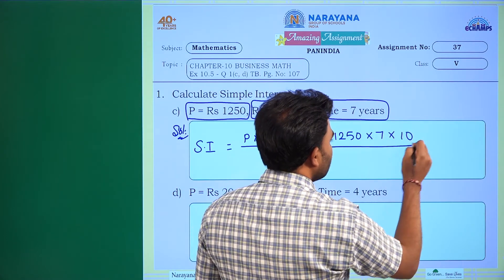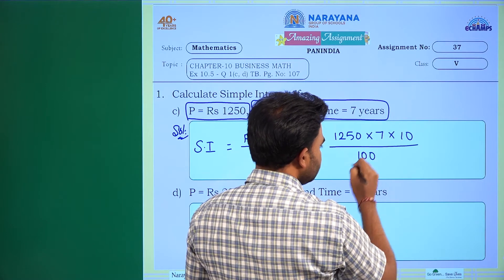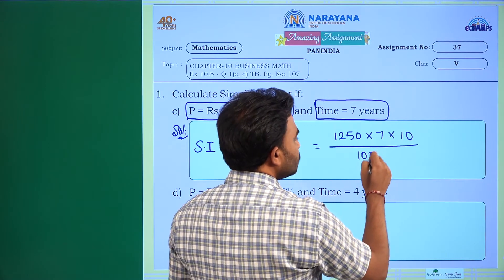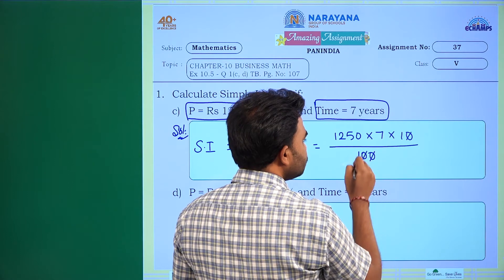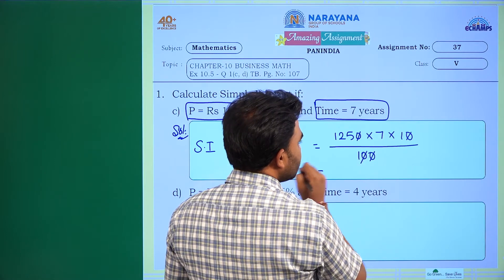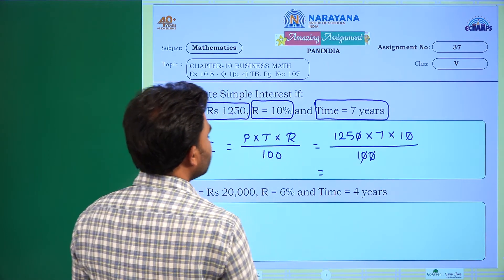Now this zero, zero cancel, zero, zero cancel. It equals 125 into 7.